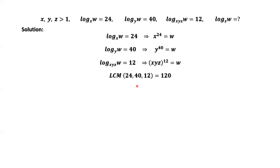Let's consider the least common multiple of 24, 40, and 12. The least common multiple equals 120.